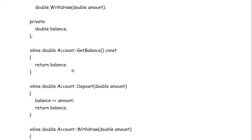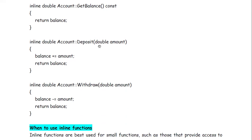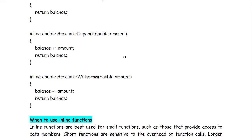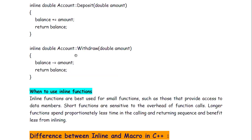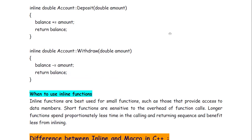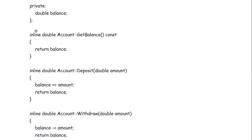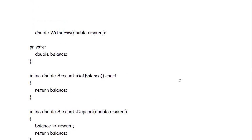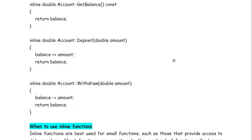Now inline double Account scope resolution operator get_balance constant return balance. Inline double Account deposit double amount then balance is added by what? Balance plus amount, return balance. Inline double Account withdraw double amount then balance will be deducted with that amount, return balance. So here you can see that we are using this keyword inline to make these functions inline.